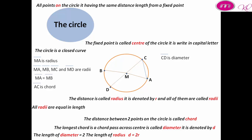The length of the diameter equals two times the length of the radius. d equals 2r. CD equals 2MC.